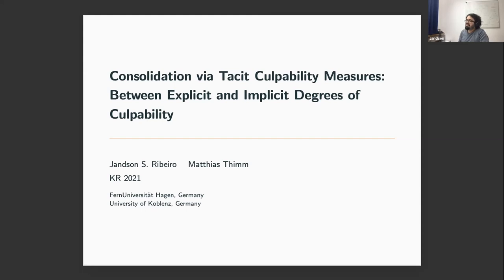Hi everyone, I'm Jensen Ribeiro, and this is a joint work with Matthias Thing. In this work, we introduce the notion of tacit culpability measures, and we use these new measures to construct a rational consolidation function.